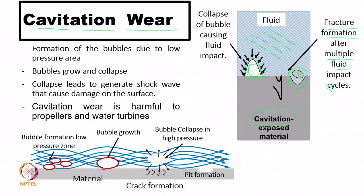Cavitation wear occurs due to formation of bubbles in low-pressure areas; bubbles can grow and merge into larger bubbles. When a bubble collapses in a fluid environment, shock waves are generated causing crack formation. When a bubble bursts on a surface, pit formation occurs. Both pit formation and crack formation (including subsurface cracks) are possible. The collapsing bubble generates shock waves that damage the surface directly through pits or subsurface cracks.